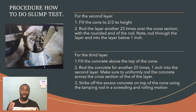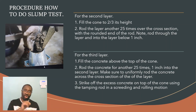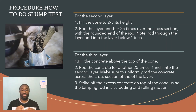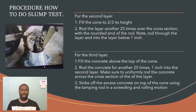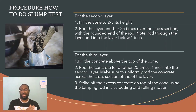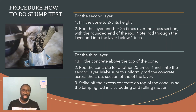For the third layer, fill the cone all the way to the top with concrete and rod another 25 times, ensuring you rod all over the cross-sectional area. Again, rod all the way through the third layer but penetrate only one inch into the second layer. After rodding 25 times, strike off the excess concrete on the top of the cone using the tamping rod with a rolling motion over the cone to ensure the concrete is level with the surface of the cone.